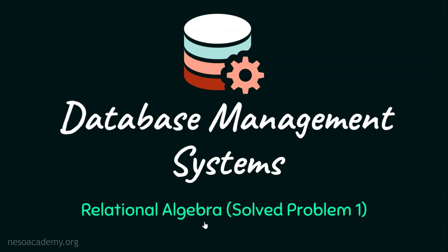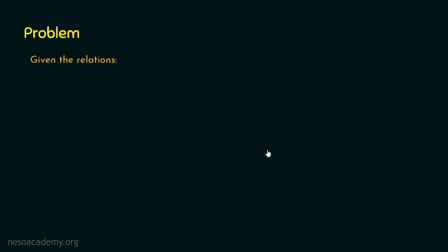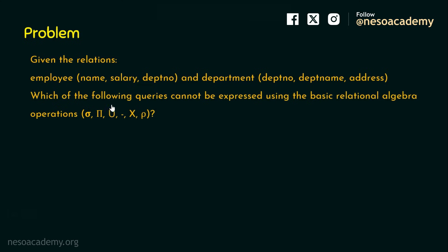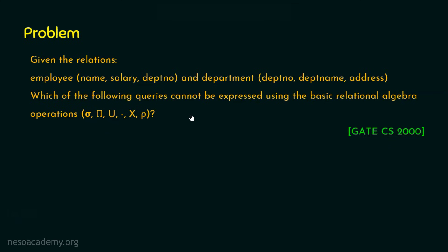Hello everyone, welcome back. In this presentation let's focus on relational algebra solved problems. We have a few problems to solve which will be helpful for people preparing for GATE exams or other competitive exams. The first problem gives us an employee relation and a department relation. The question is: which of the following queries cannot be expressed using the basic relational algebra operations? This question was asked in GATE Computer Science in the year 2000.